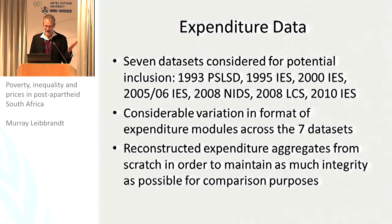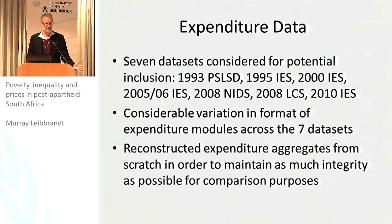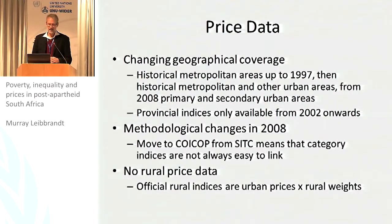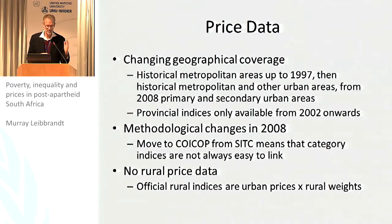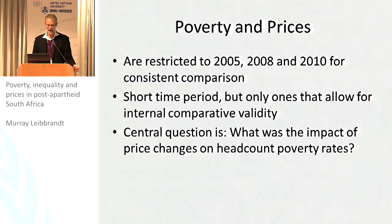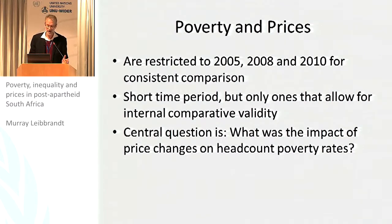We potentially had great data: 1993, 1995, 2000, 2005, 2006, 2008, and 2010. But there's a lot of variation in the format of the expenditure data, and we reconstructed the aggregates doing the best we could. On the price data, there are also issues — the coverage changed over time, there were methodological changes, and there's not really any rural price data. After spending months there, we found that on the expenditure side we only had three datasets that were consistent in the way we needed: 2005, 2008, and 2010. A key point: we don't have prices and quantities, only expenditures, so we couldn't do the full toolkit approach.